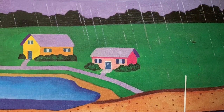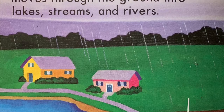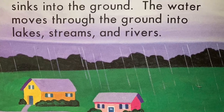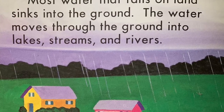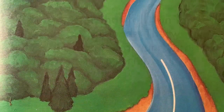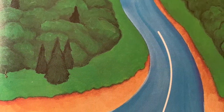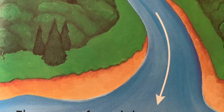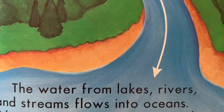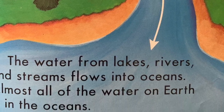Most water that falls on land sinks into the ground. The water moves through the ground into lakes, streams, and rivers. The water from lakes, rivers, and streams flows into oceans. Almost all of the water on Earth is in the oceans.